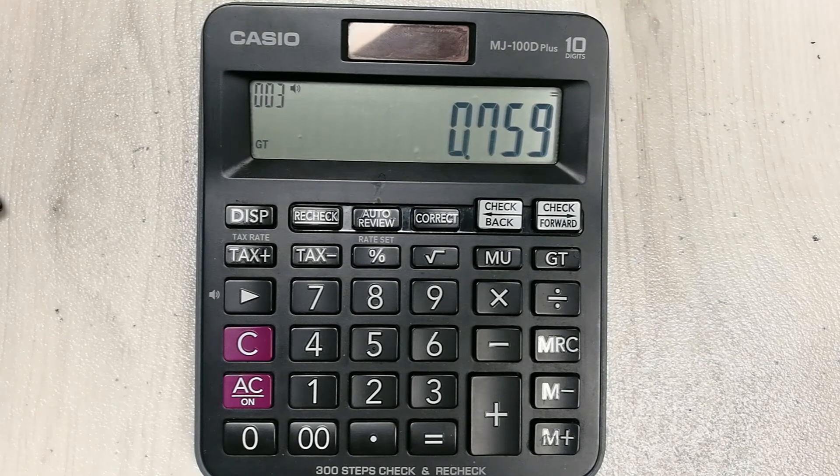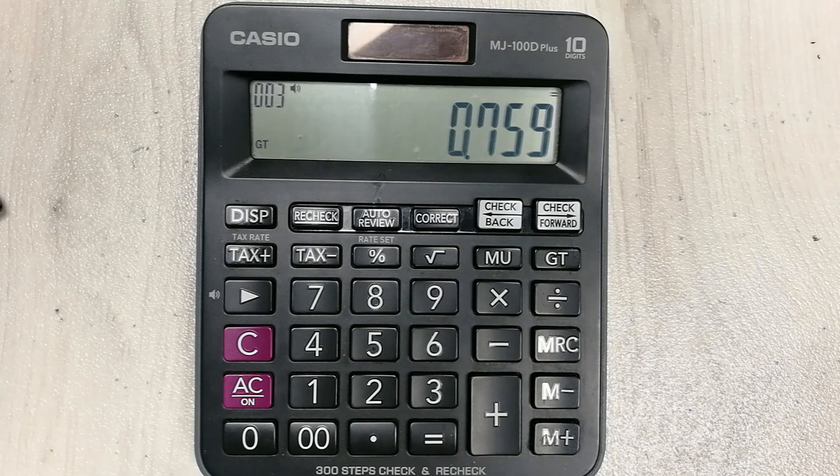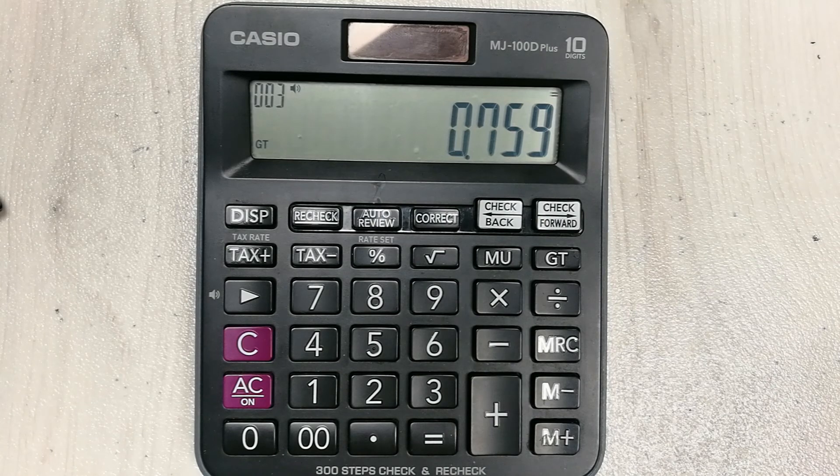So here is the final answer. 75.9 percent equals 0.759. So guys, you can convert the complex number percentages into a decimal number easily.